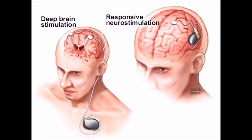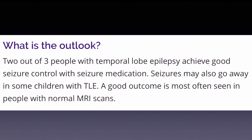If anti-epileptic drugs didn't work and surgery is not an option, responsive neurostimulation is probably the final option. The good news is most people aren't going to need these neurostimulation devices or brain surgery. Two out of three people with temporal lobe epilepsy achieve good seizure control with basic medications. Seizures may also go away in some children. A good outcome is most often seen in people with normal MRI scans — if there's no sclerosis visible, they're most likely going to have a great outlook.